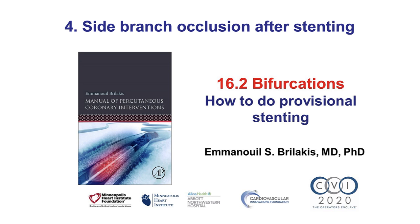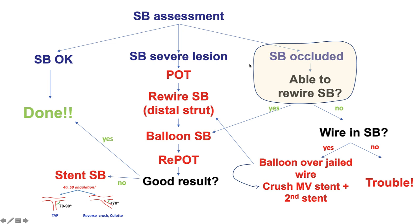Cause number four for acute vessel closure is occlusion of a side branch during bifurcation stenting, discussed in detail in video 16.2 about provisional bifurcation stenting. The bottom line is: if this happens, it is critical to have a wire in the side branch. If so, the side branch is rewired, or if needed, a balloon can be advanced over the jailed wire and inflated to restore some flow. If there is no wire in the side branch, that can be a problem. That is why it is best to have a wire in any important side branch prior to deploying a stent in the main vessel.